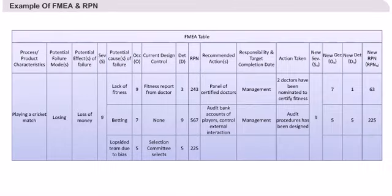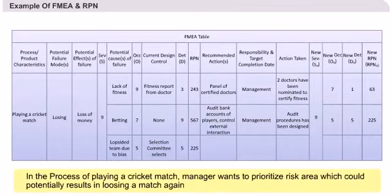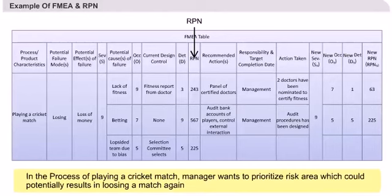In this example shown, the manager of a cricket team is doing FMEA for a cricket match. Looking at the first set of RPN calculated, the team losing a game because of betting done by players has the highest RPN.